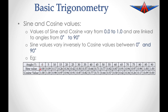The sine of 0 is going to be the same value as the cosine of 90. Similarly, the sine of 5 degrees is the same as the cosine of 85 degrees. We eventually reach a point at 45 degrees where they are equal to each other.